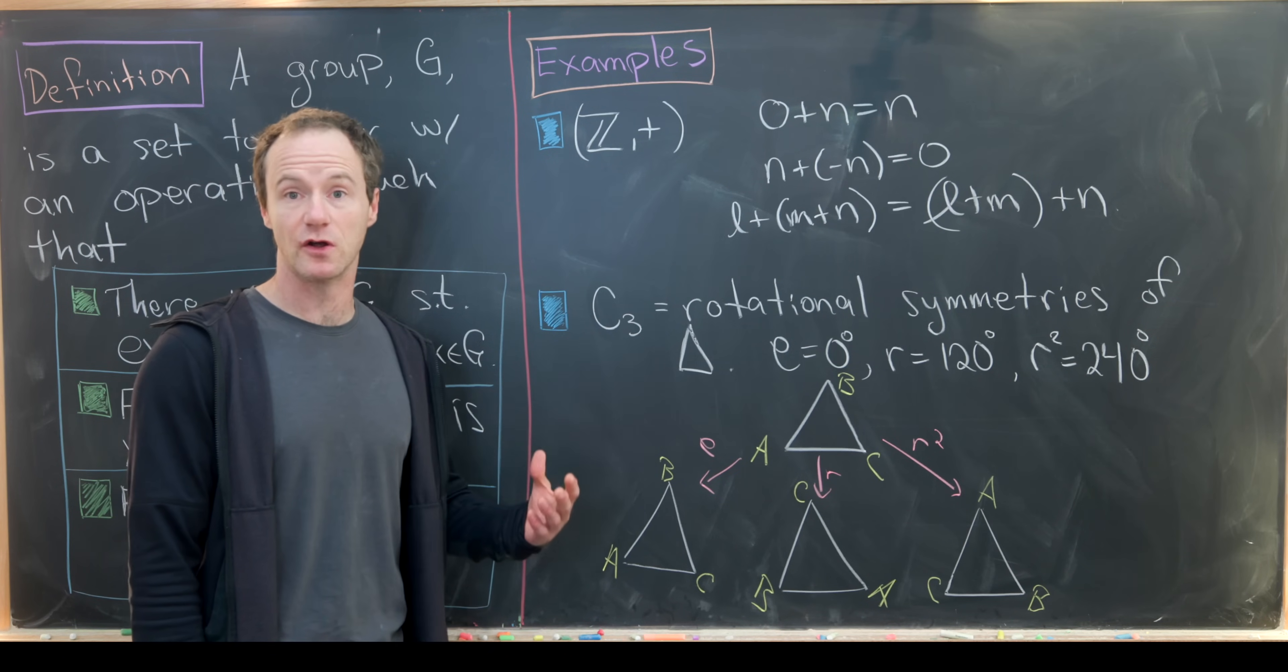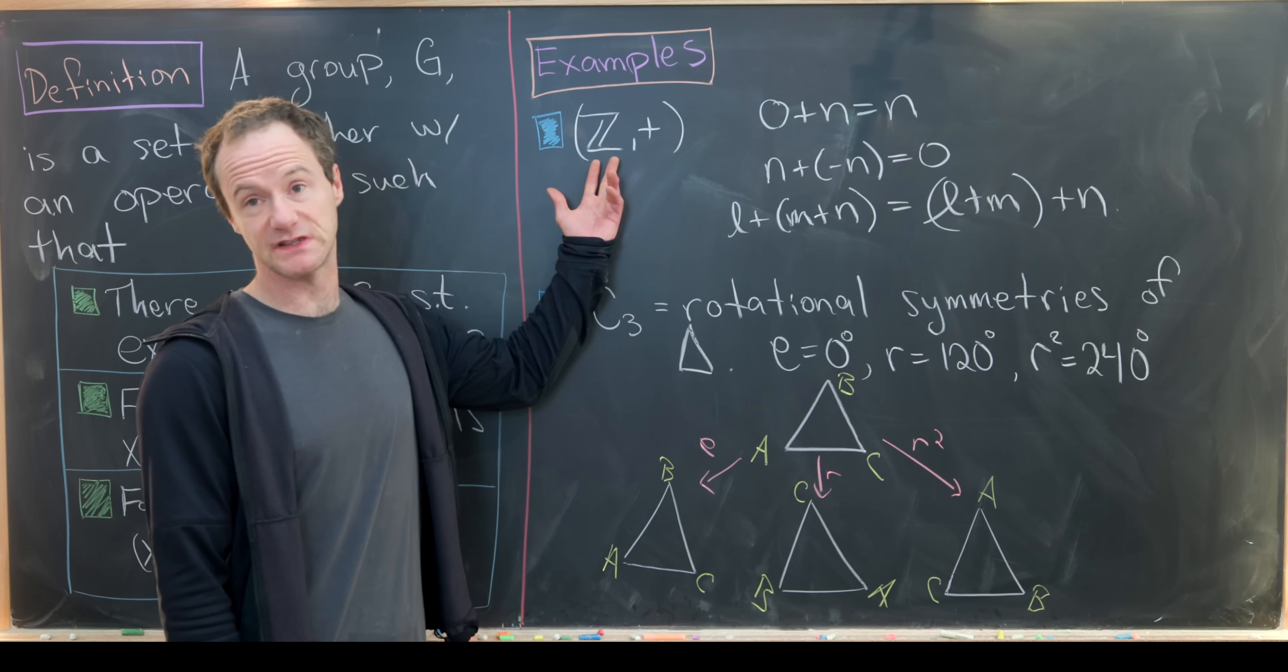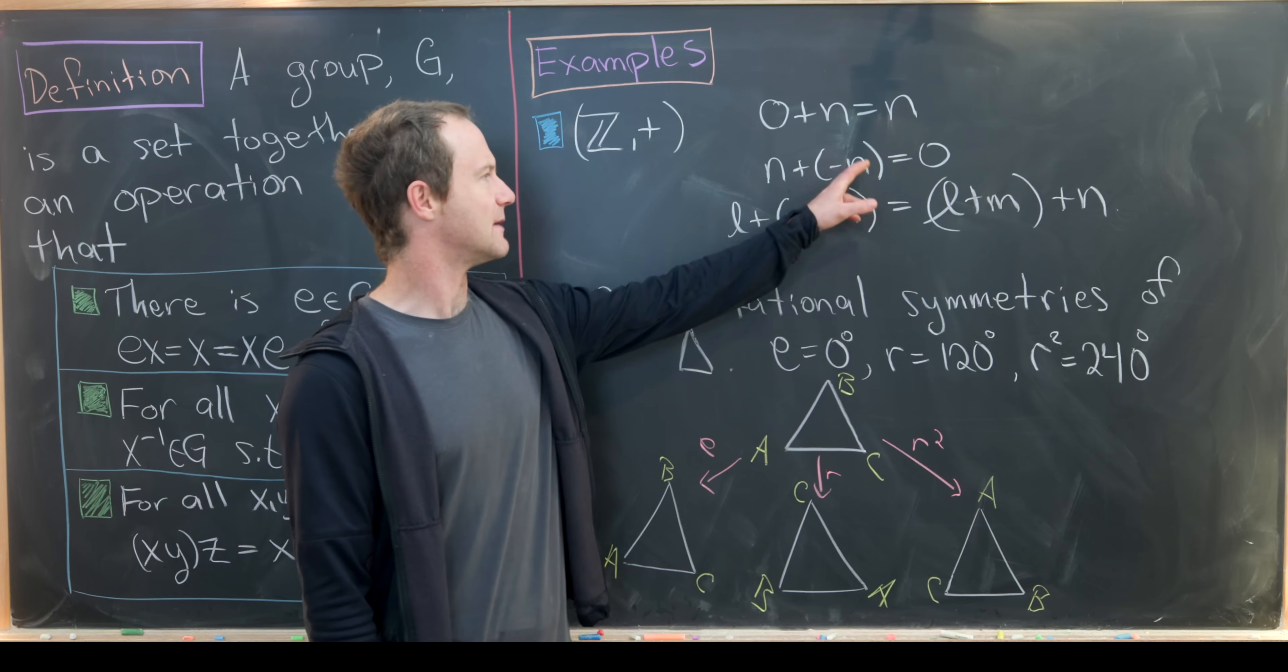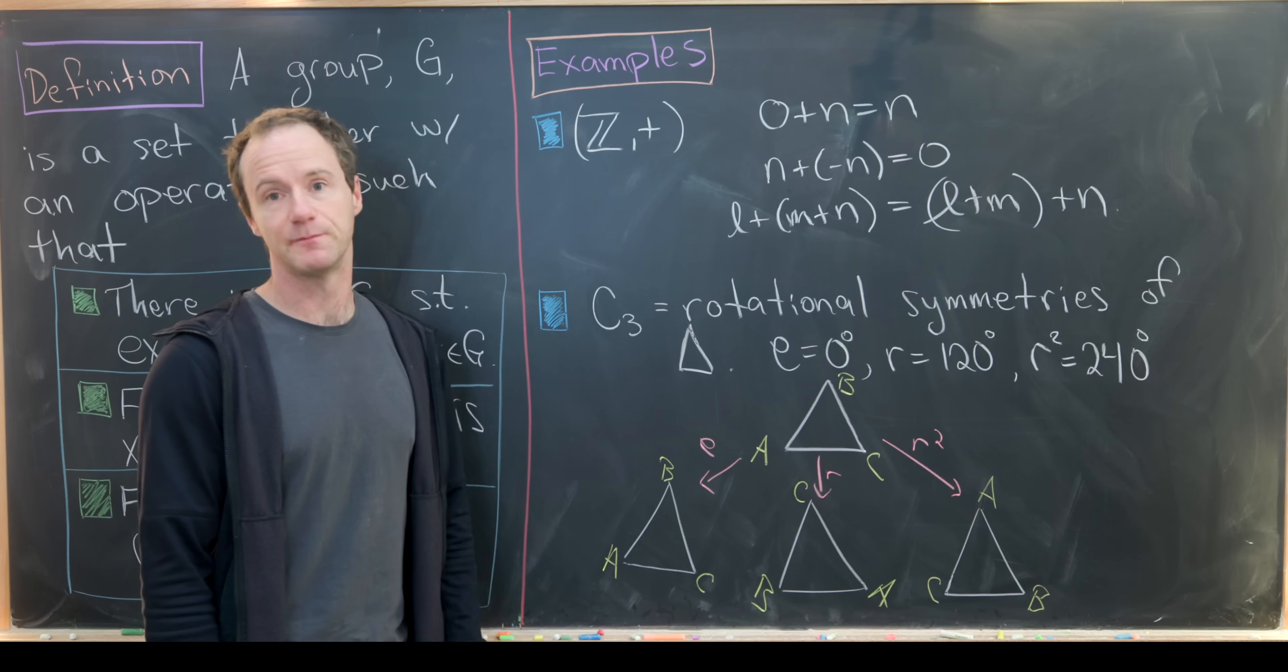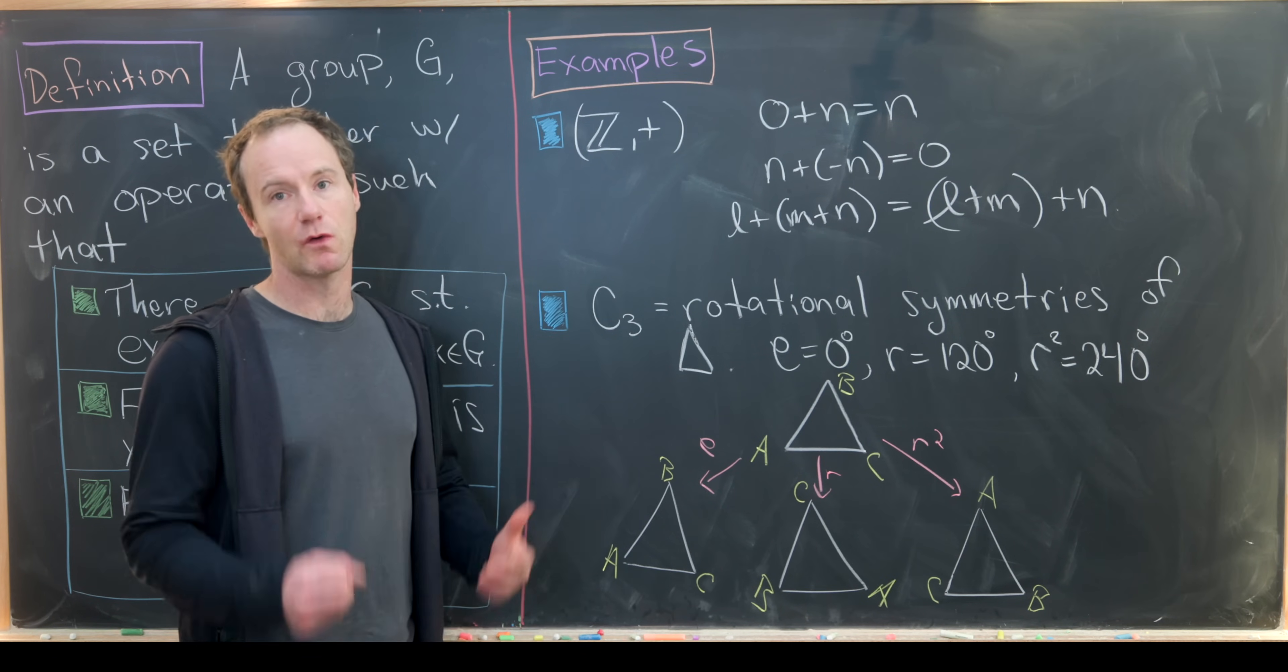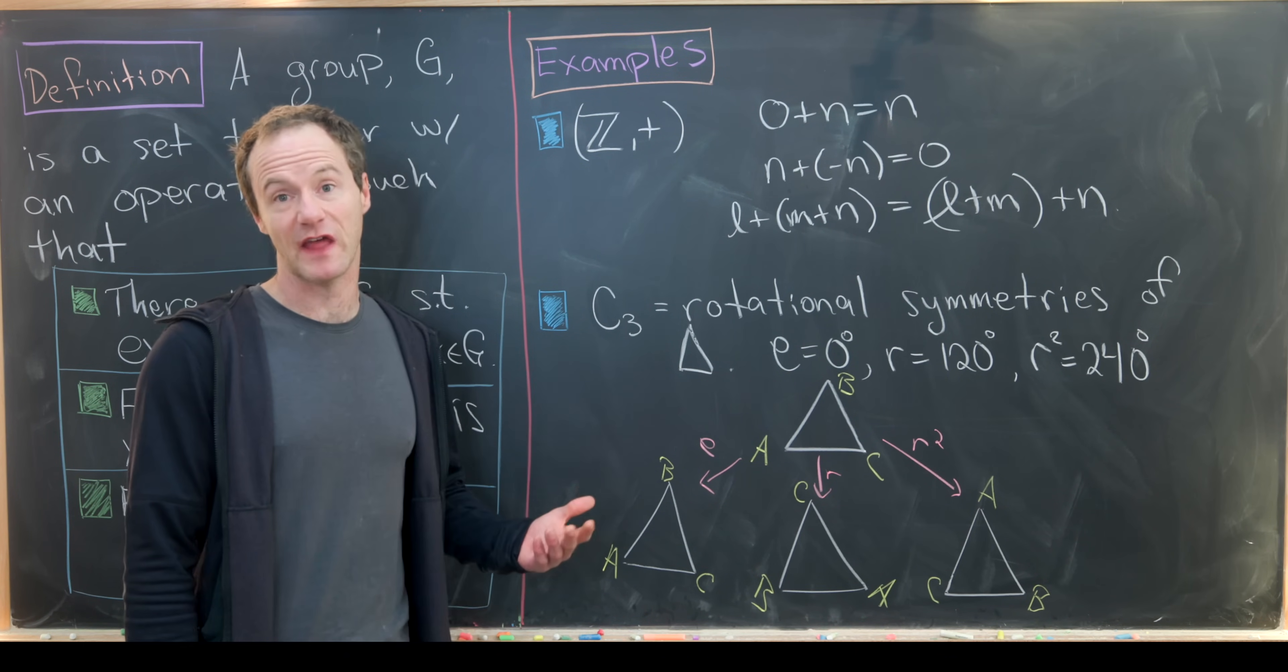We also have inverses because we have negative numbers. If we were working over just positive natural numbers, then we would not have inverses. But since we've got negative numbers, we have inverses. n plus negative n equals zero. So minus n is the additive inverse of n, and these guys come in pairs. Furthermore, addition is associative.